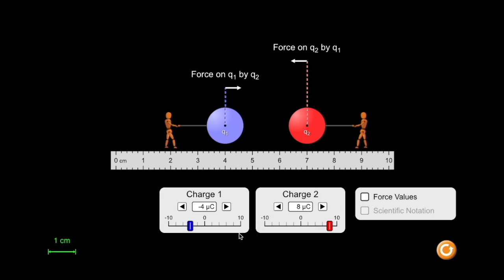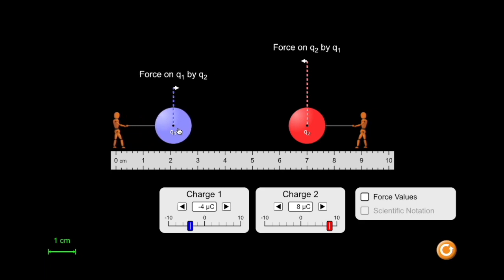Select and drag one of the blue or red objects on the screen to change the distance between the two objects.